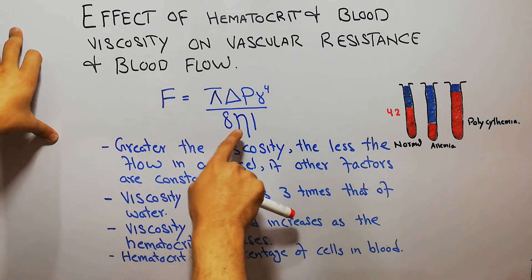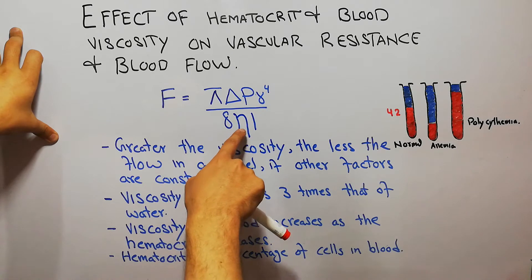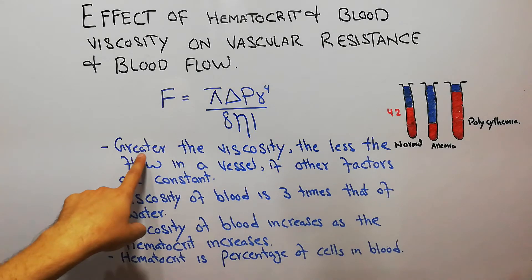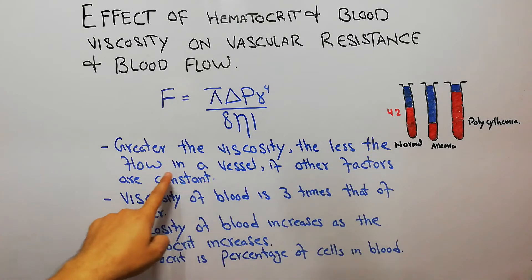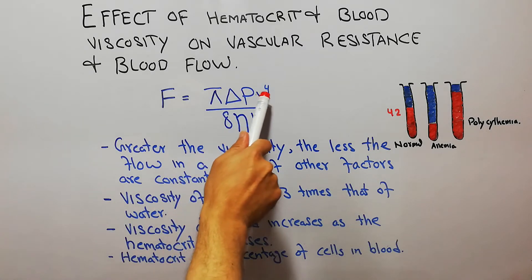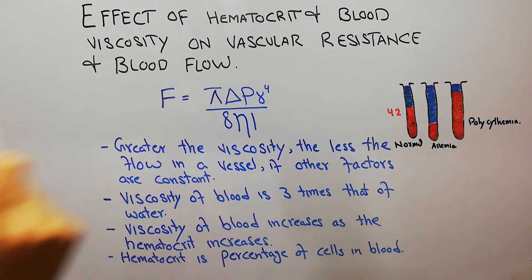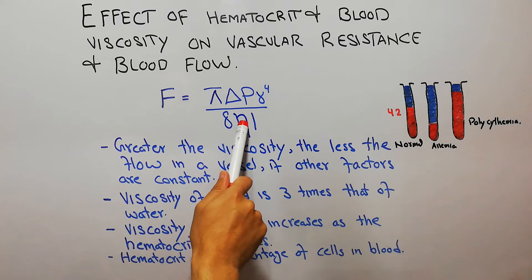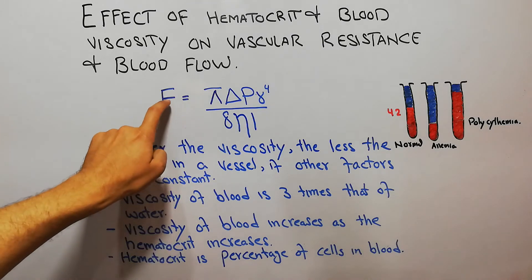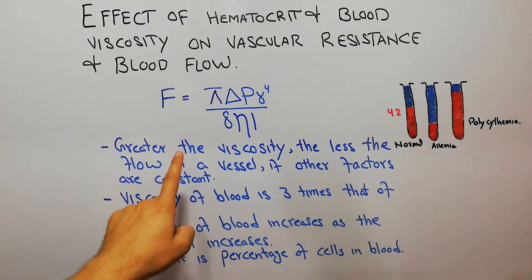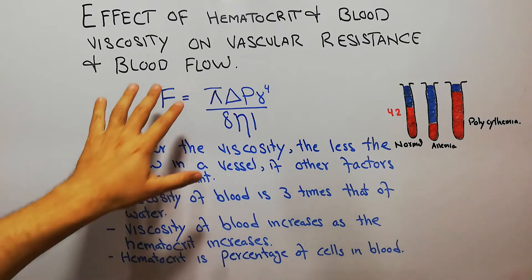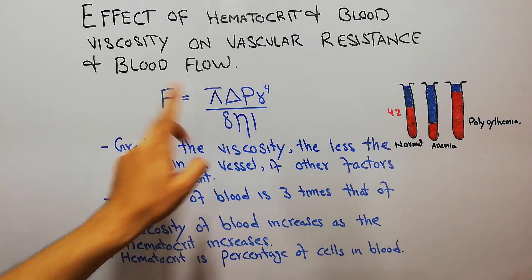In Poiseuille's equation, viscosity is represented by eta. It shows that greater the viscosity, the less the flow in a vessel if other factors are constant. If pressure, radius, and length of the vessel are all constant, then only changing the viscosity will negatively affect blood flow, because viscosity and flow are inversely proportional to each other.